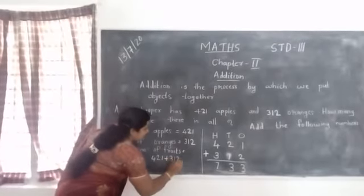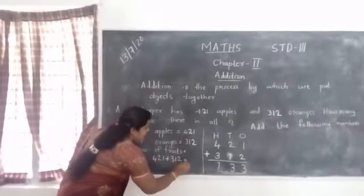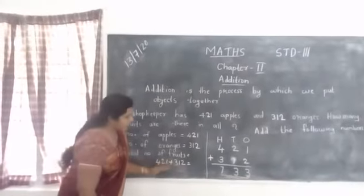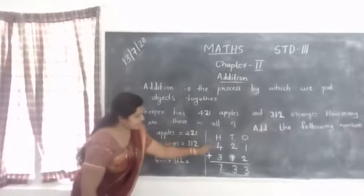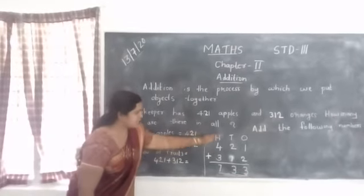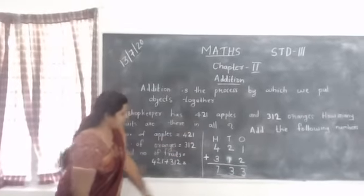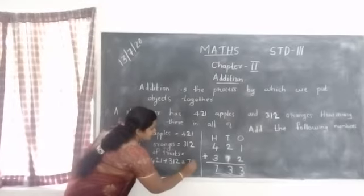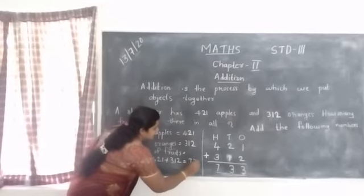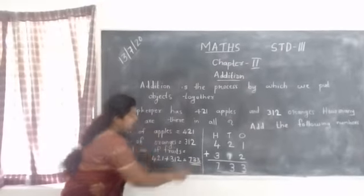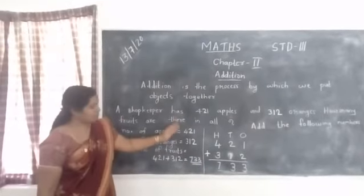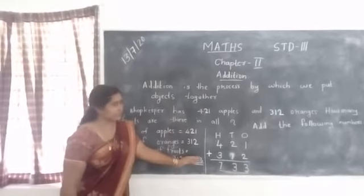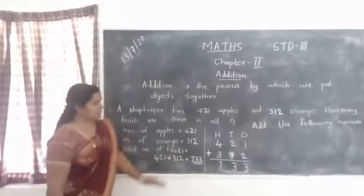Addition gives us 733. So if you add the numbers according to place value, you get the answer. The total is 733 fruits. How many fruits are there? 733 fruits.